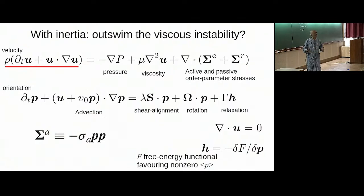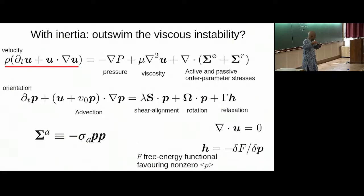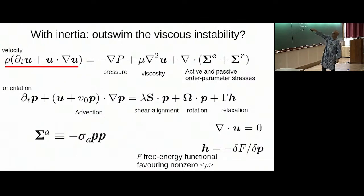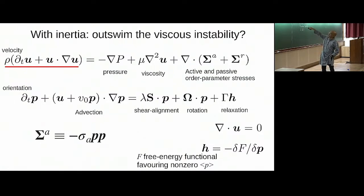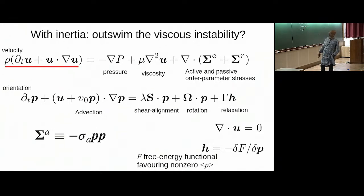I'll be lazy and ignore the concentration field. To do it formally you need birth and death to keep concentration fixed, but I'll just keep an orientation field and a velocity field. The dynamics, as described last time, is that orientation can advect itself, fluid velocity can advect orientation, vorticity can reorient, and shear can align.